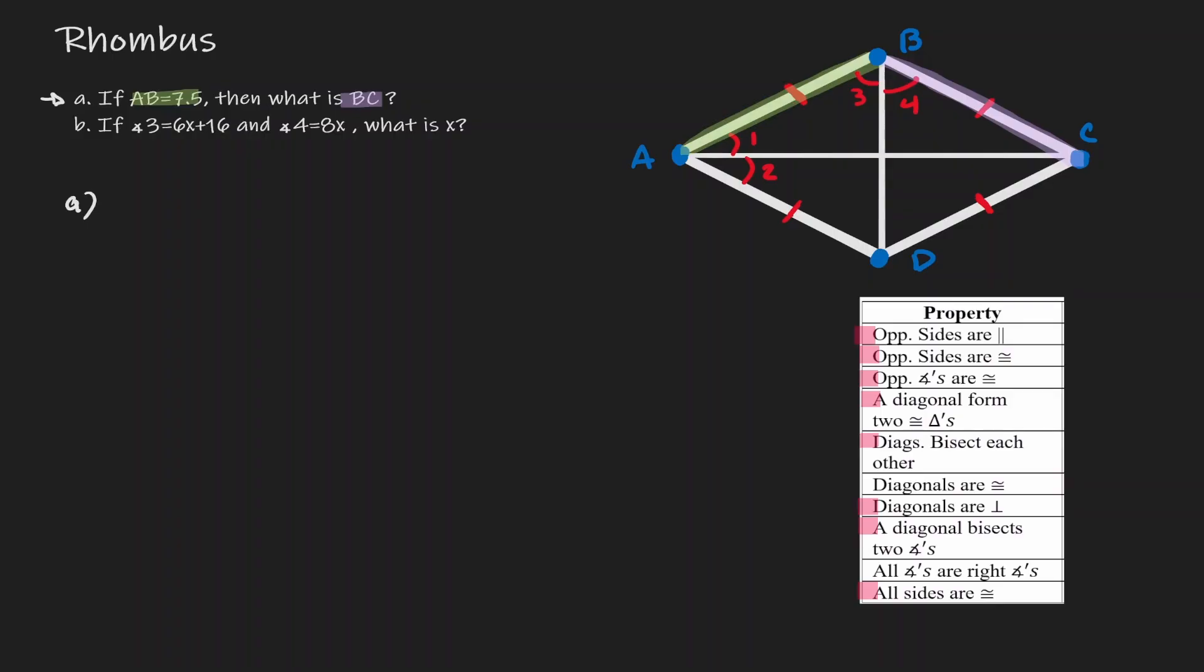Well, we know that all sides within the rhombus are congruent to each other. So therefore, AB is congruent to BC. So therefore, we know that BC has a length of 7.5.